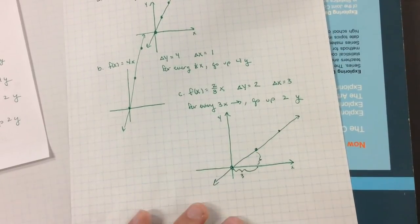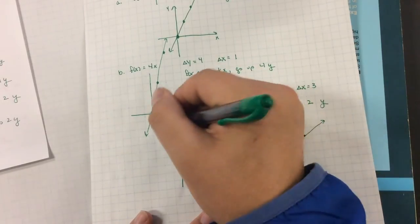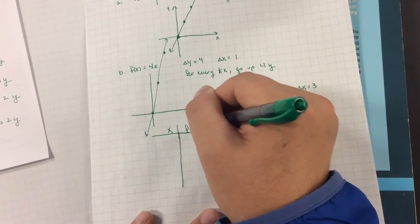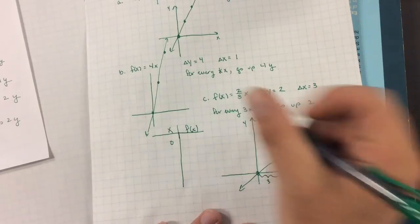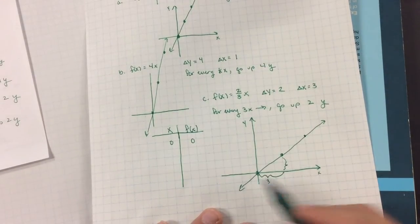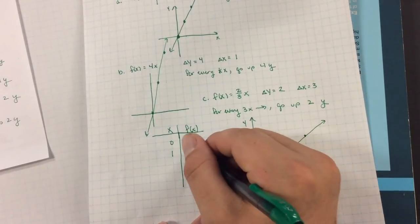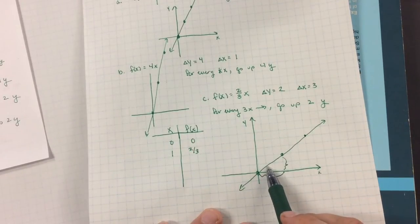If we wanted to make sure we were doing this right, we could always go and make a table. An x, f of x table. When I plug in 0 to this equation, I get 0 back. Is that a point on my graph? It sure is. If I plug in 1, I get 2 thirds back. Is that pretty close? And my graph looks like that's at about 2 thirds.